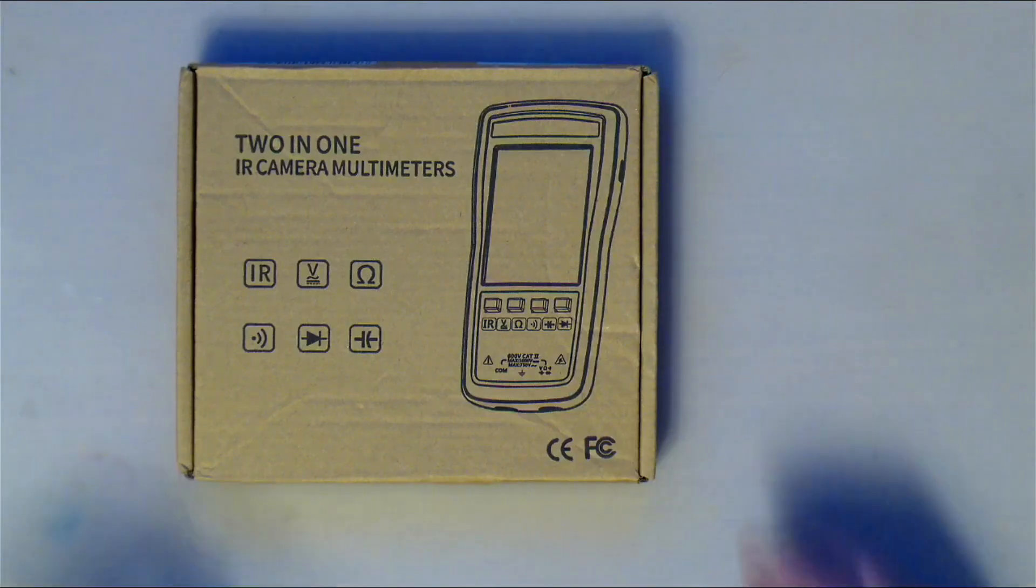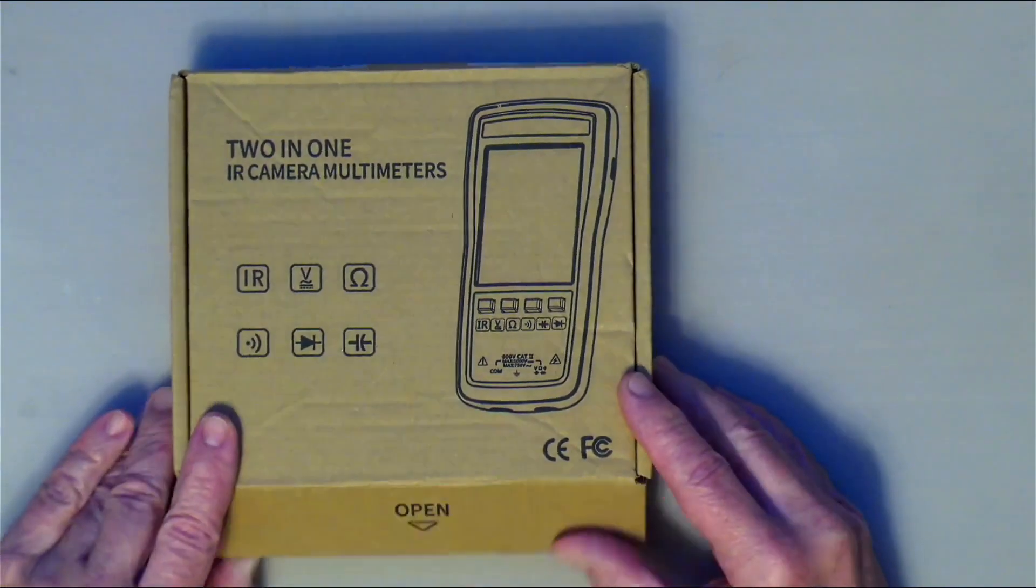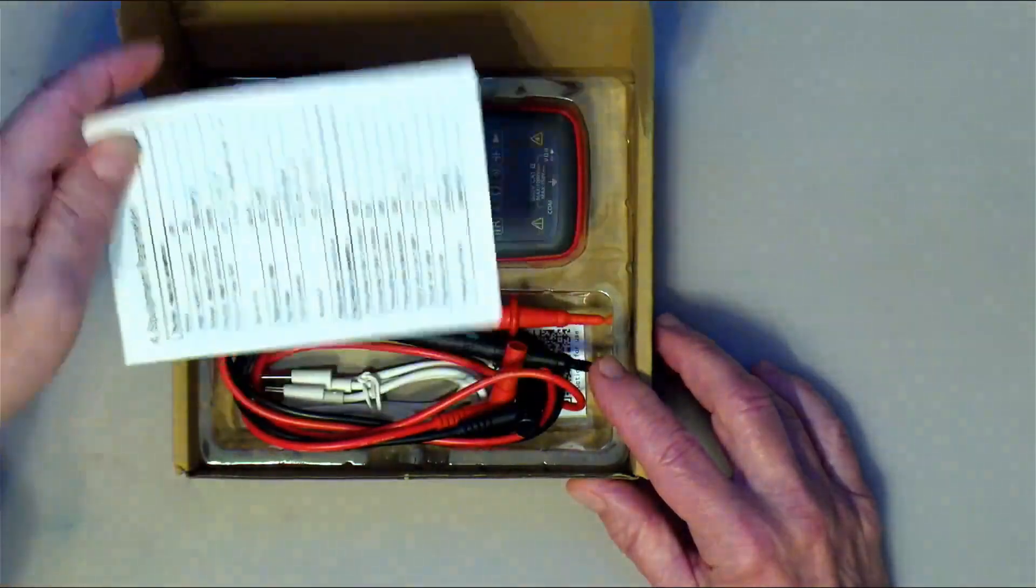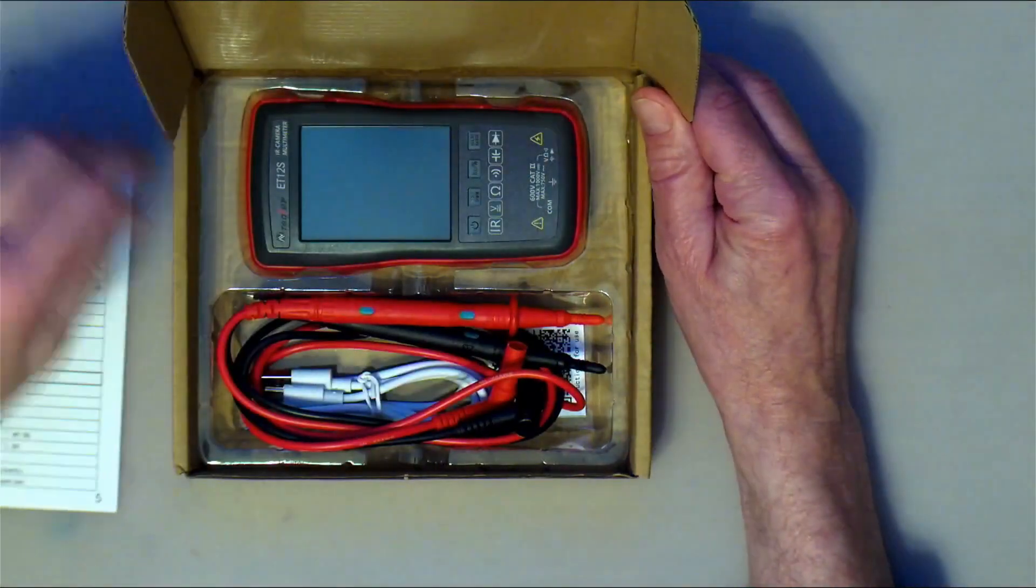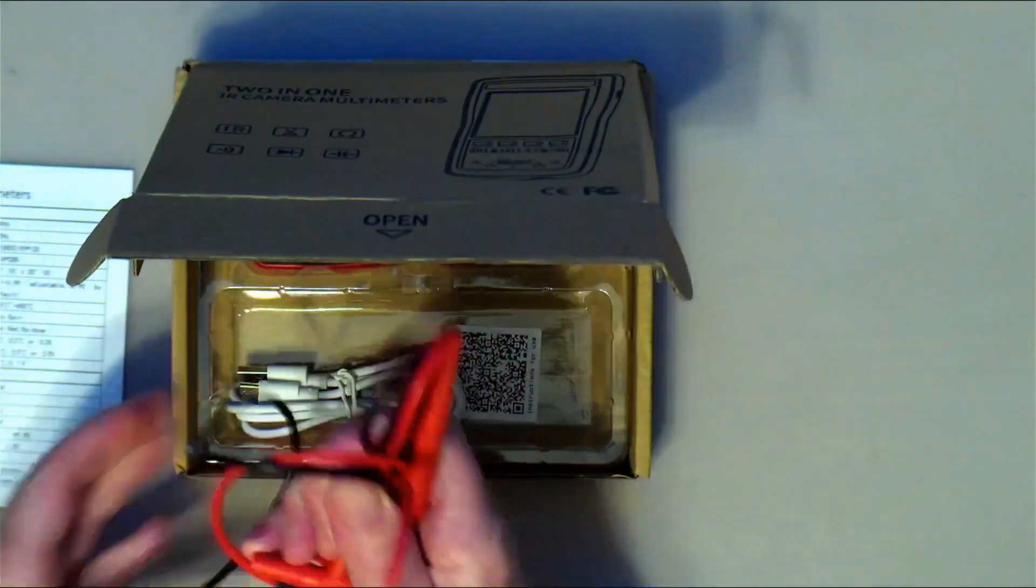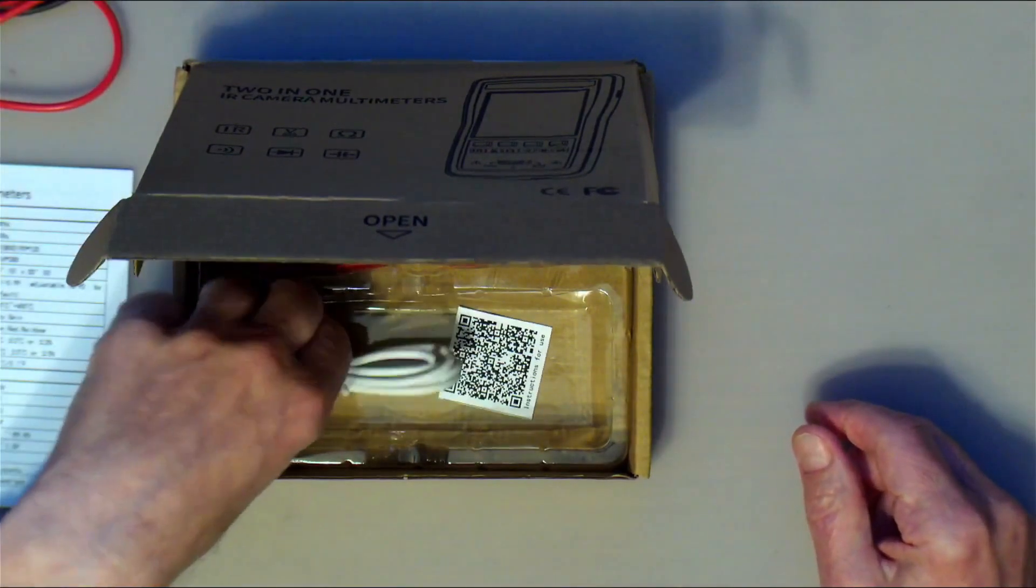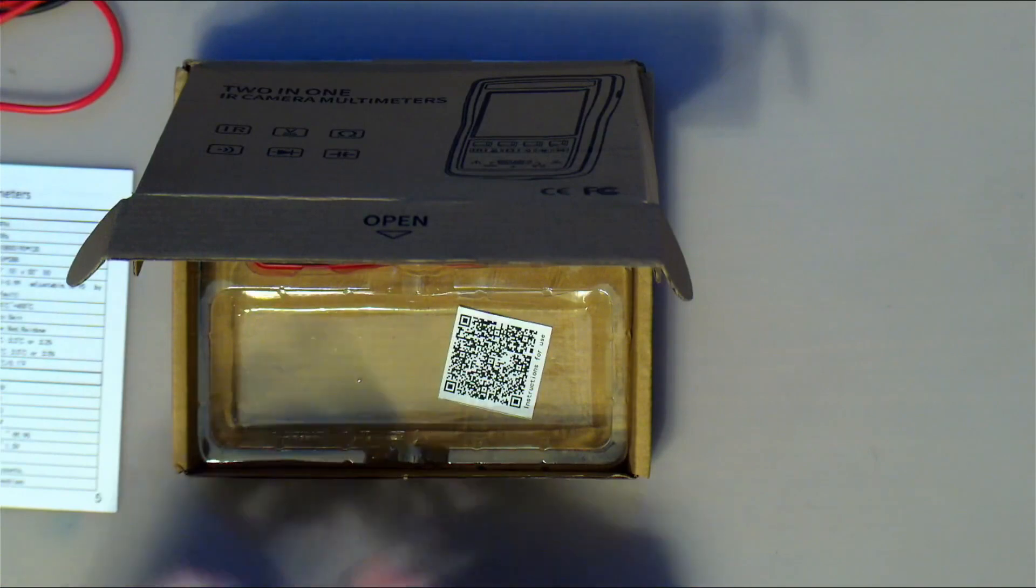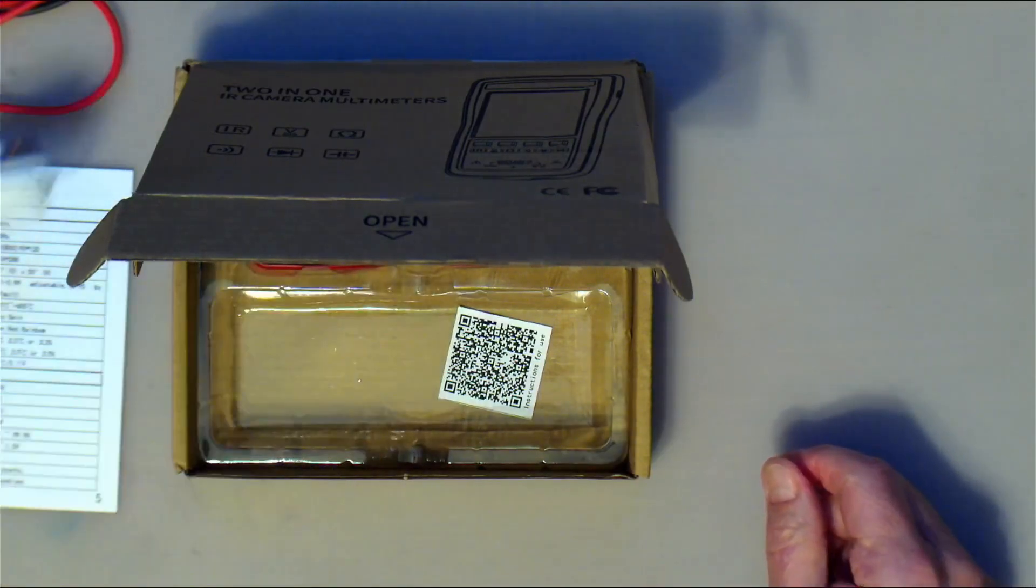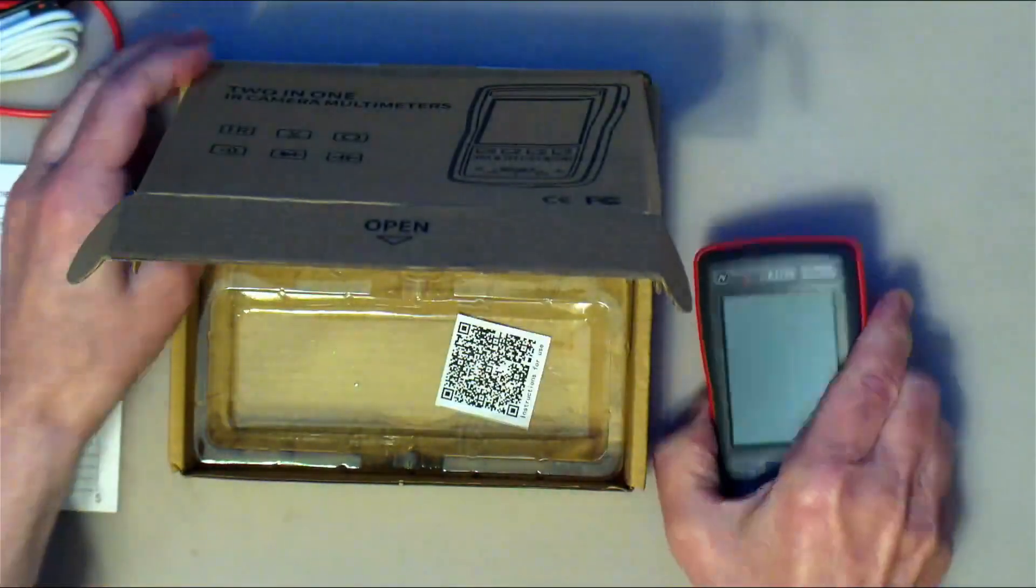Okay, so when you receive this thing, it comes in a little cardboard box and all you'll find in there is a little instruction manual and a set of cheap probes, which I don't tend to use. I put those in my box of stuff that I don't use and a little USB-C charging cable. And there is the device itself and that's basically it.